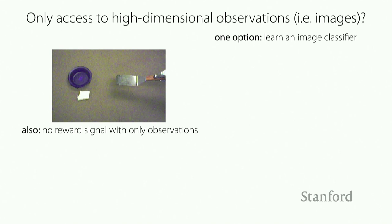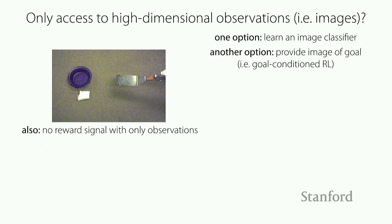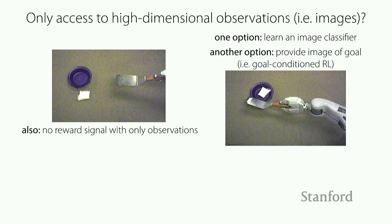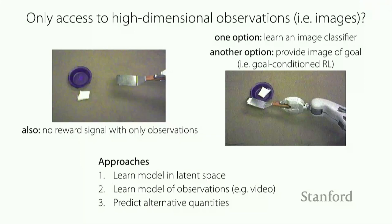For the reward function when only using images, one option is to learn an image classifier — or meta-learn one. Another option is to provide an image of the goal, corresponding to the goal-conditioned RL setting covered previously. You could give the robot a goal image and have it try to reach that goal state. For model-based RL in this setting, there are three classes of approaches: learning a latent representation and learning a model in that space, learning a model of observations directly, and predicting alternative quantities other than raw observations.